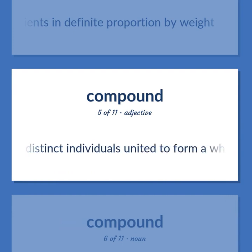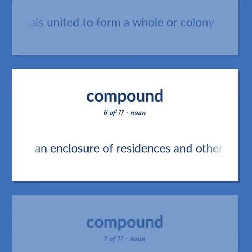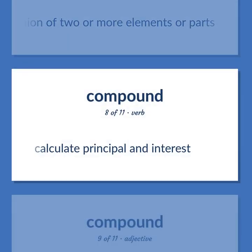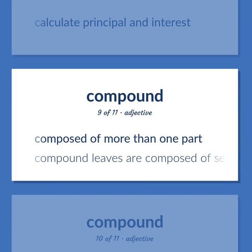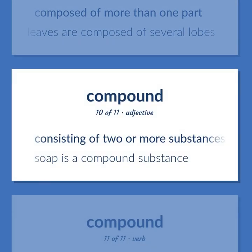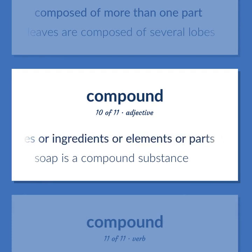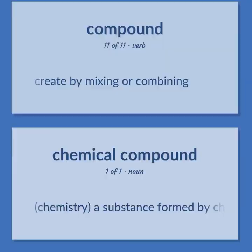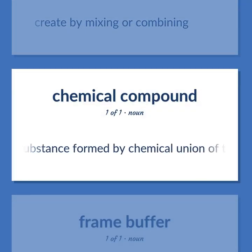Compound: Chemistry — a substance formed by chemical union of two or more elements or ingredients in definite proportion by weight. Composed of many distinct individuals united to form a whole or colony. An enclosure of residences and other buildings, especially in the Orient. A whole formed by a union of two or more elements or parts. Calculate principle and interest. Composed of more than one part — compound leaves are composed of several lobes. Consisting of two or more substances or ingredients or elements or parts; soap as a compound substance. Create by mixing or combining.